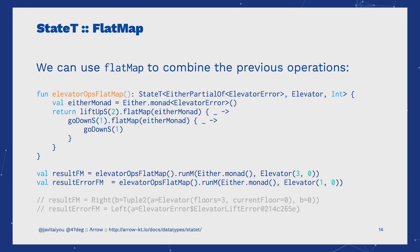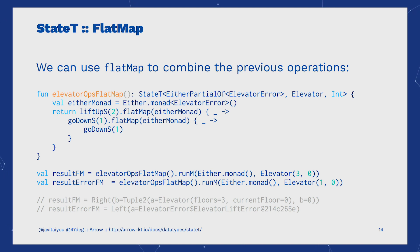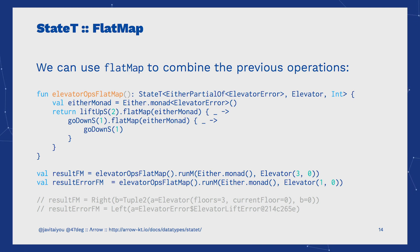Monad transformers are monads too, so we can use flatMap to combine the previous operations. Notice how we don't worry about being under the Either context or a State context. Each call will update the original state of our elevator. See how both in the success and error cases we get the capabilities of Either to handle errors in our operations, together with the ability of keeping state in a functional way.